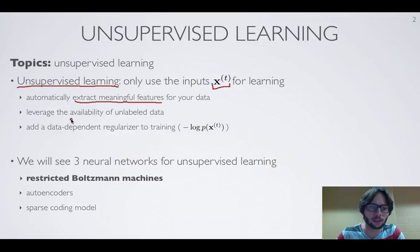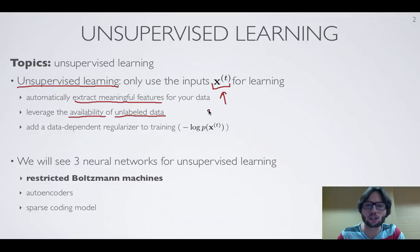It's also going to allow us to leverage the availability of unlabeled data. Imagine you have a very small labeled training set but a lot of unlabeled examples. For instance, you might have an image classification problem where you only have a few labeled images, but you could find a lot of unlabeled images on the internet that have not been classified as belonging to the particular labels you're interested in.